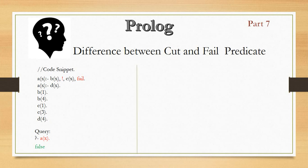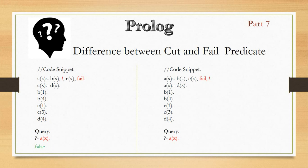Let's go through the next code snippet to clearly understand cut and fail. Here the code is B(X), C(X), fail, and then the cut predicate (!). The query again asks for A(X). B(X) and C(X) give X equal to 1 and X equal to 4. Then comes fail, which makes the whole statement fail. Since the statement fails before reaching the cut, it never jumps to the cut predicate. That's why for the next rule A(X) with D(X), the value of X here becomes 4.